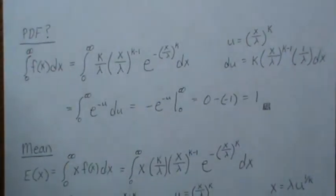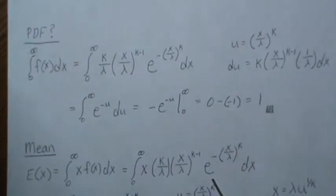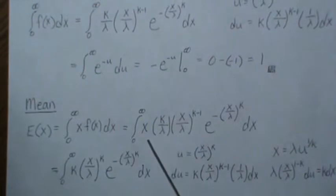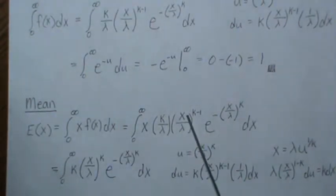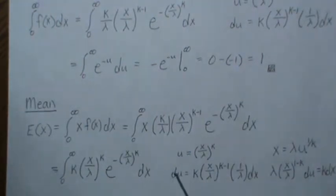Now to calculate the mean, it's expected value of x, we stick in x times its density, we do this, then I combined the x into here and one of the lambdas here to get this. We make a u substitution of x over lambda, it's the same we got up here, but we have to subtract some of this over because we got to make it match this.